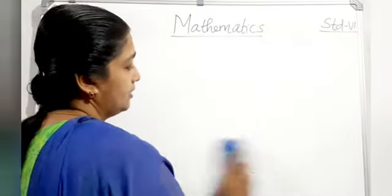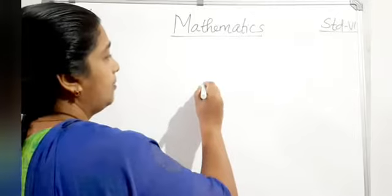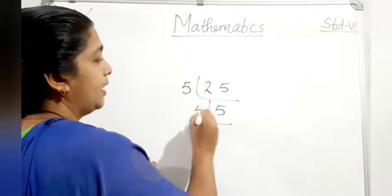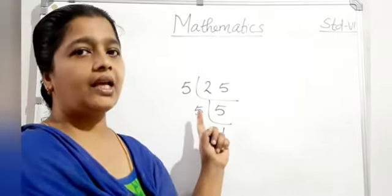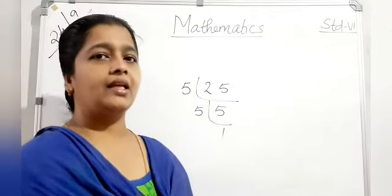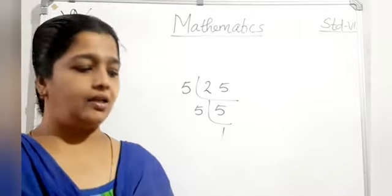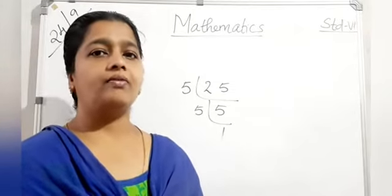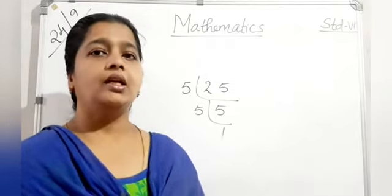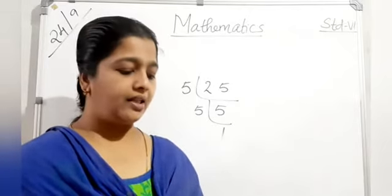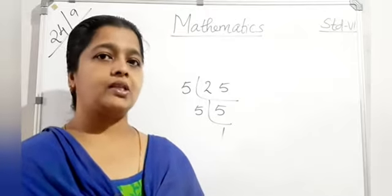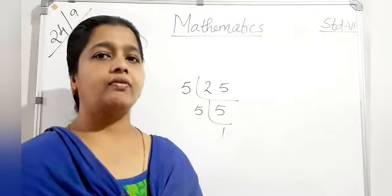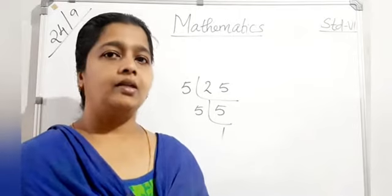Prime factorization means using only prime numbers. Example: 25 divided by 5 equals 5, and 5 divided by 5 equals 1. So 25 = 5 × 5. Co-prime numbers are any two numbers having only 1 as a common factor. Twin primes are two prime numbers whose difference is 2. A perfect number is one where the sum of all its factors equals twice the given number.